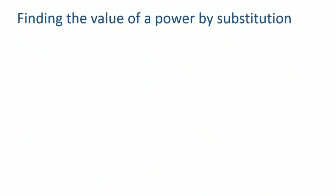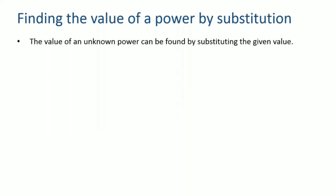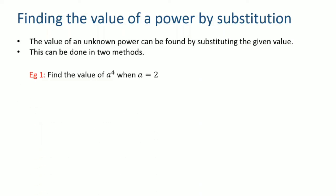Coming to the final part of this section: finding the value of a power by substitution. The value of an unknown power can be found by substituting a given number to the unknown term. This can be done in two methods. For example, find the value of a to the power 4 when a is equal to 2. In the first method, I substitute the value of a — that is 2 — so a to the power 4 becomes 2 to the power 4. Then I expand and multiply: 2 into 2 is 4, 4 into 2 is 8, 8 into 2 is 16.